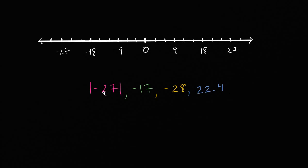So let's first think about the absolute value of negative 27. So what is the absolute value of negative 27? Well, it's just going to be positive 27. This right over here is the same thing as positive 27 because negative 27 is 27 to the left of zero. So let's plot the absolute value of negative 27. Well, it's really 27, so it's going to be right over here. So that is the absolute value of negative 27. It is positive 27.